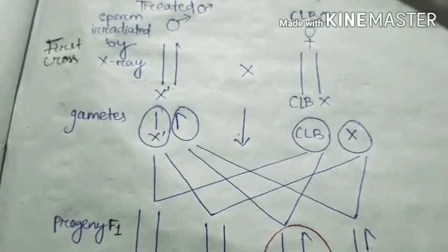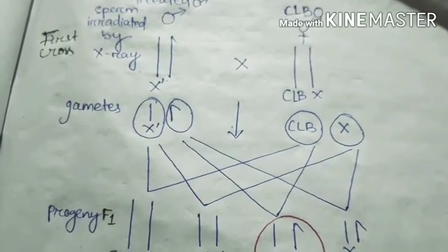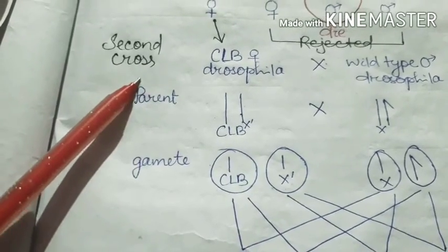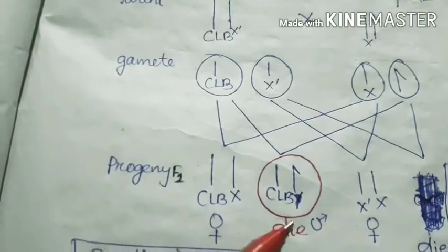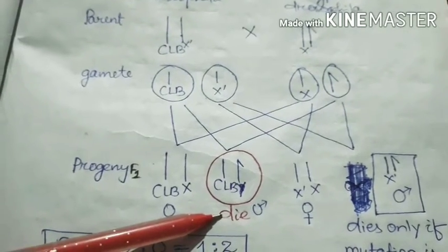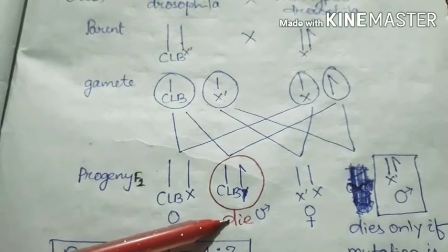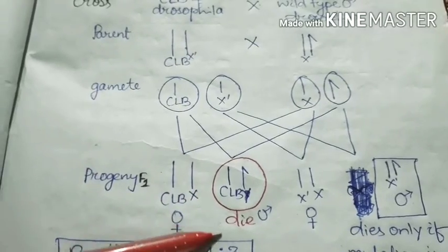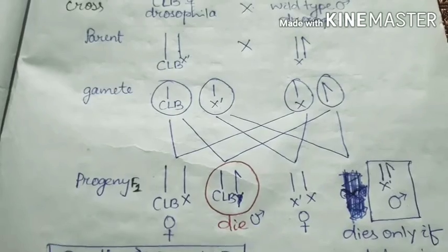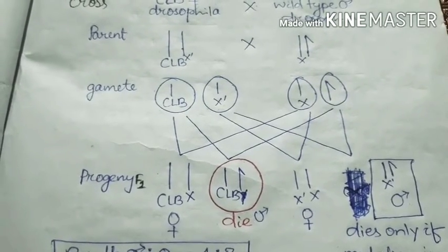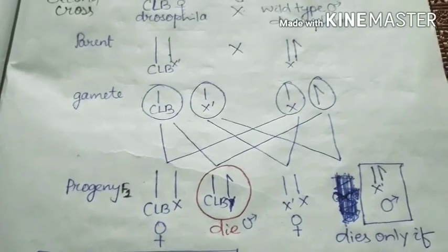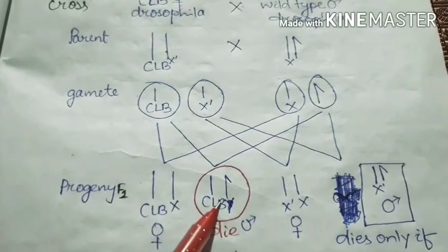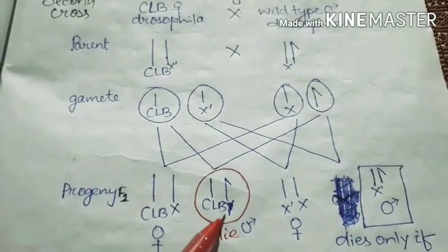Male flies are irradiated with X-ray and mated with CLB females. Four types of offspring are produced. In the second cross or second mating, all the male progenies died. Why did this happen? If the irradiated X chromosome had no induced lethal mutation, the progeny of the second type mating would be male to female as one to two.